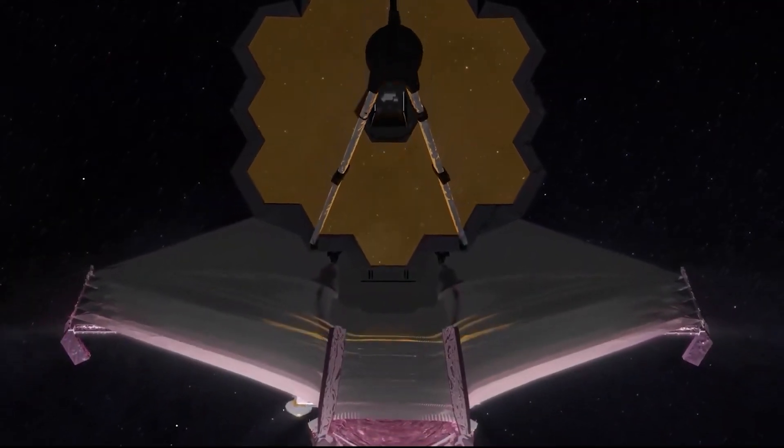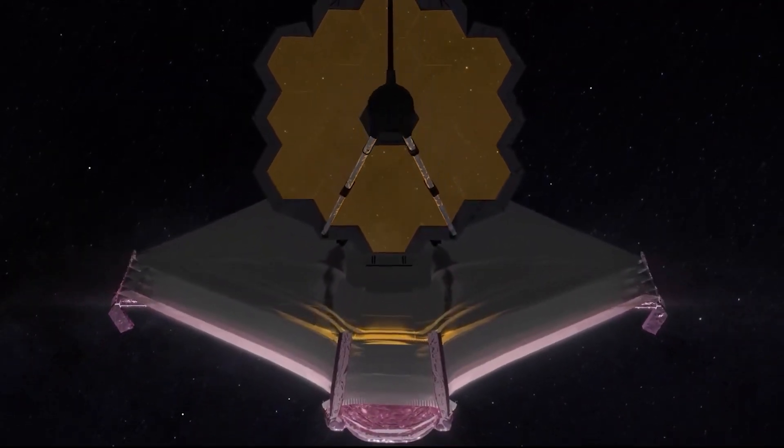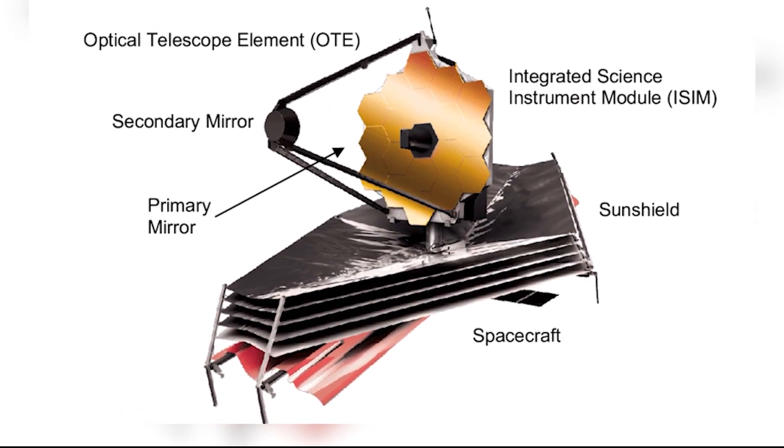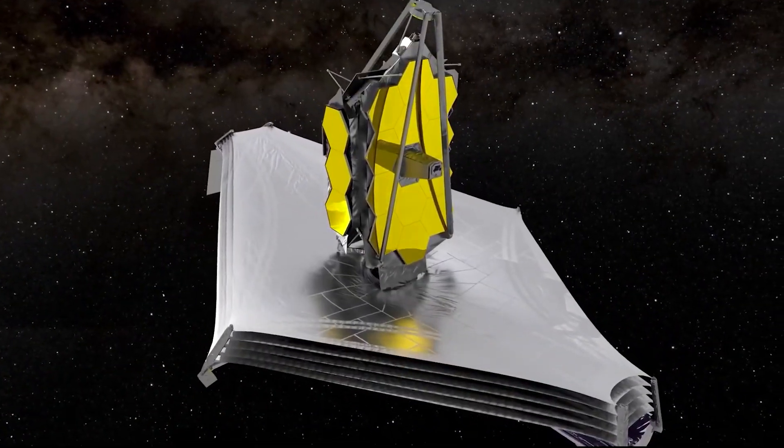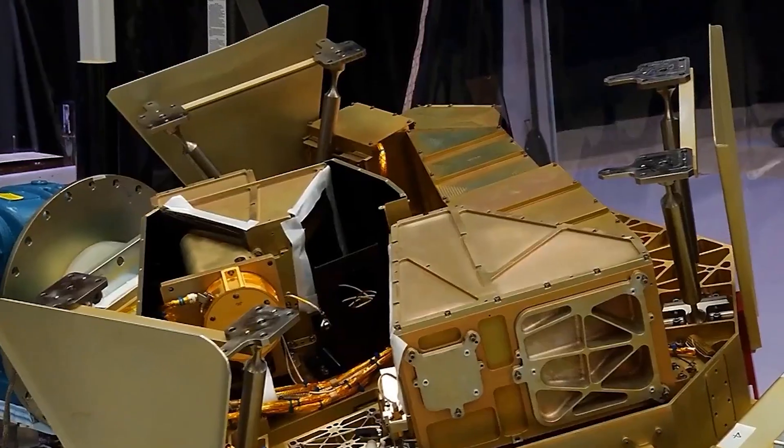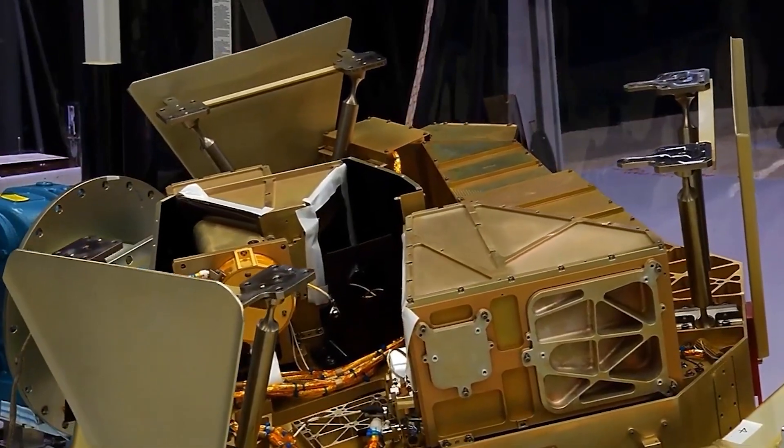James Webb is the world's most advanced telescope. The integrated science instrument module gives the telescope electrical power, cooling, and structural stability. The ISIM carries the telescope's guide camera and four science instruments.